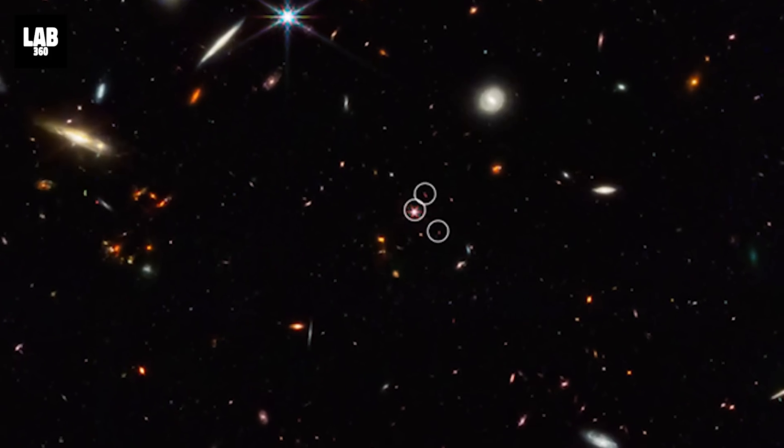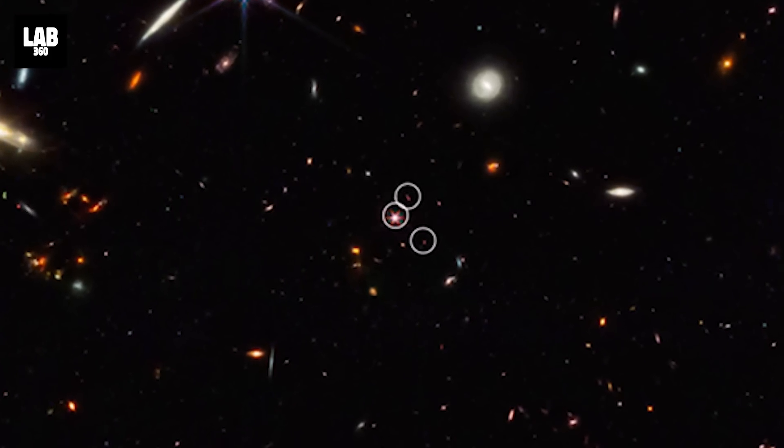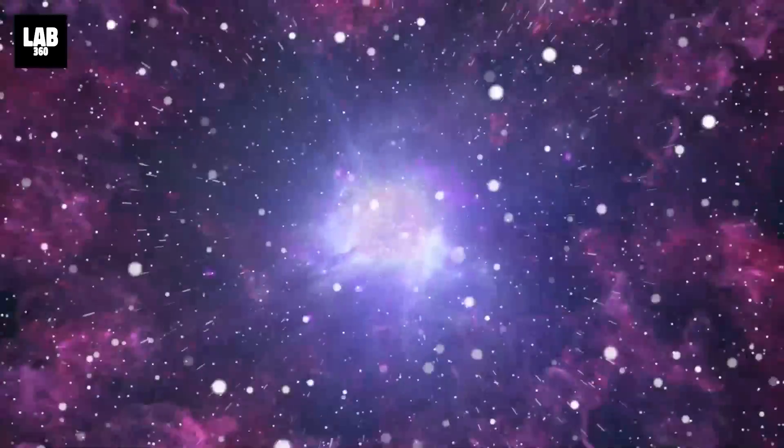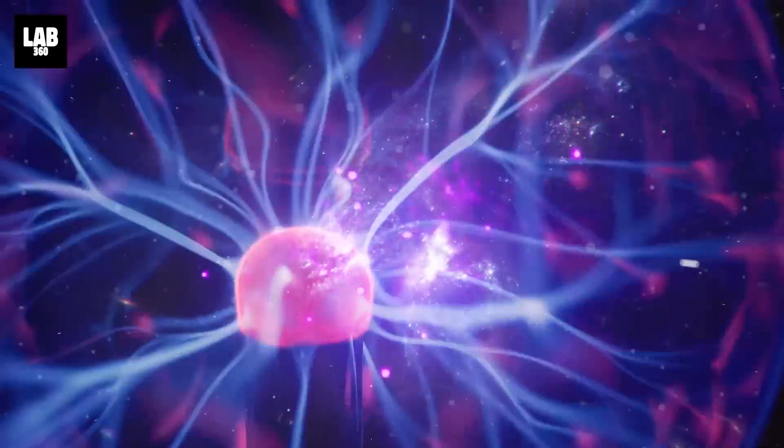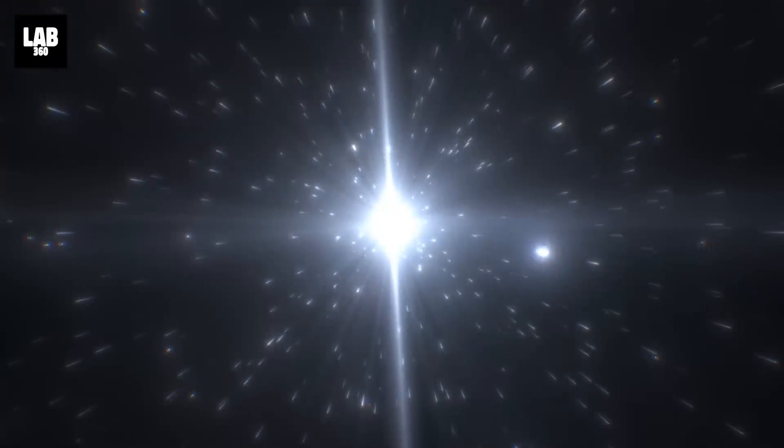This ancient filament of gas and stars may represent the oldest known thread of the cosmic web. This discovery can shed light on how the universe was formed, and also the invisible strings that hold it together. It is anchored by an extremely bright celestial object, with a supermassive black hole known as a quasar at its center.